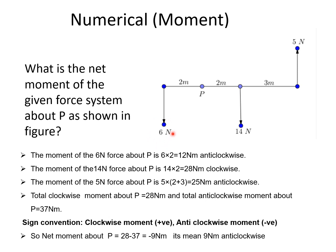The 6 Newton force about P gives an anticlockwise effect — so it is 12 Newton meters anticlockwise. For the 14 Newton force about P, the distance is 2 meters, giving 14 into 2 equals 28 Newton meters, clockwise. For the 5 Newton force about P, the distance is 3 plus 2 meters, giving 5 into 5 equals 25 Newton meters, anticlockwise. Total clockwise moment is 28 Newton meters; total anticlockwise moment is 12 plus 25 equals 37 Newton meters.